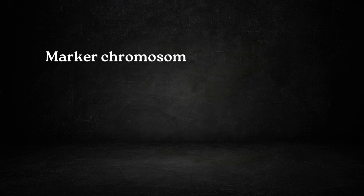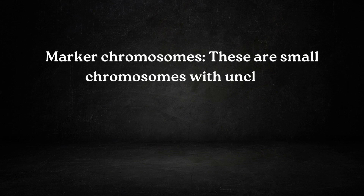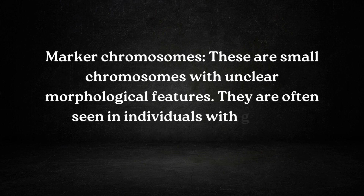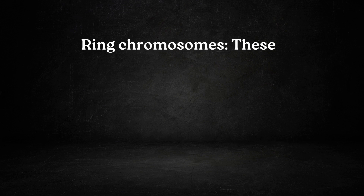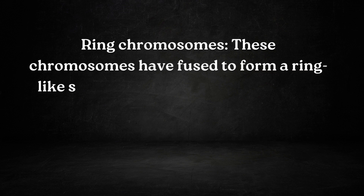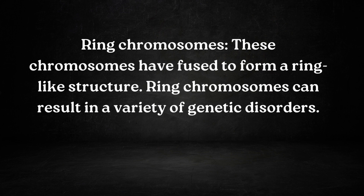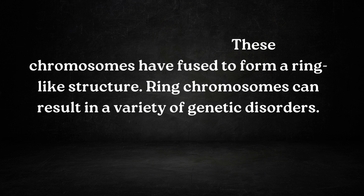Number six is marker chromosomes. These are small chromosomes with unclear morphological features and are often seen in individuals with genetic disorders. At last, we have ring chromosomes. These chromosomes have fused to form a ring-like structure, which can result in a variety of genetic disorders.